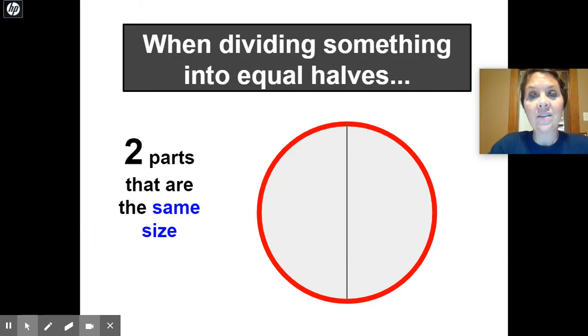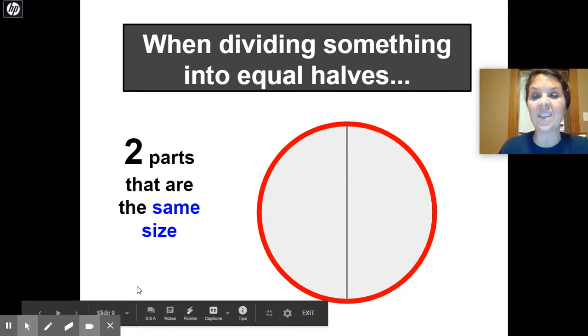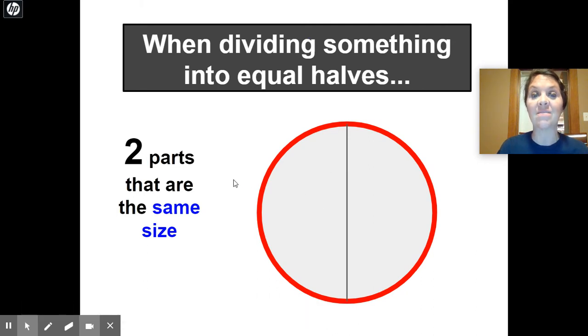So, when dividing something into equal halves, again, we have to have, if it's going to be a half, it has to be two parts. One, two, just like my cookie that I divided with you, and those parts have to be the same size. So, it has to be two parts, one, two, and they have to be the same size. Is this two parts? Yes, yes. Are these the same size? Yep.